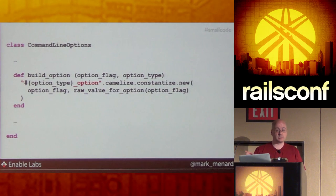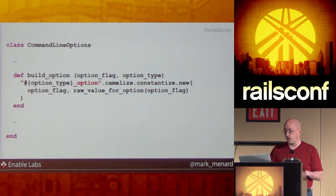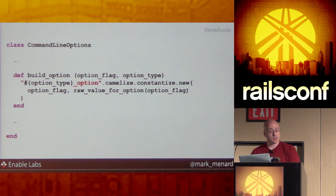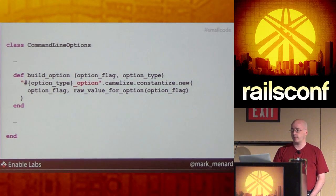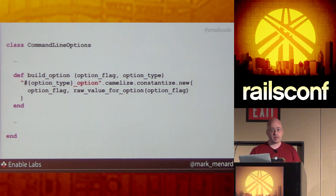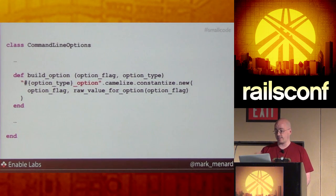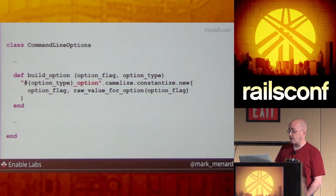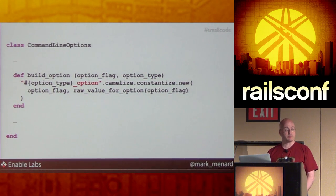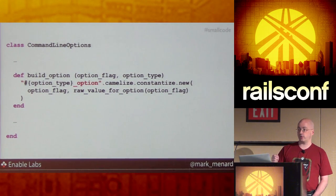Alternatively, you could use a hash to map from the string, boolean, and integer symbols to the concrete classes — kind of like what Sandy did in her Gilded Rose Kata solution. That's okay, but it's an additional thing to maintain over time — a reason to open the command line options file if you add a new type of option. If using dynamic Ruby bothers you, make a hash. Personally, I'm fine with using the dynamic capabilities of my language. In my case, I've inoculated the command line option class from needing to change to support new option types. At this point, this class should be closed for modification, but open for extension.